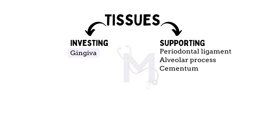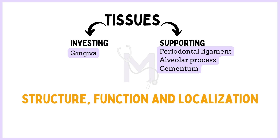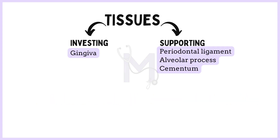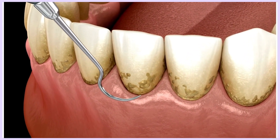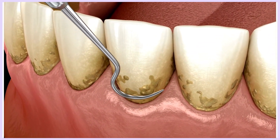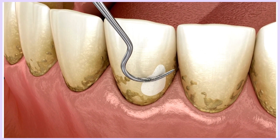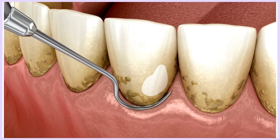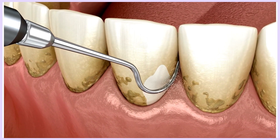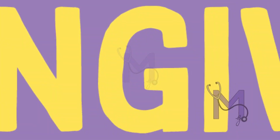The gingiva is the investing tissue and the rest are the supporting or attachment tissues. Each of these four tissues can be further differentiated in terms of structure, function and localization. Understanding this dynamic network of tissues is pivotal for the performance of many procedures related to periodontal therapy. Let us first focus on the most peripheral component of the periodontium, the gingiva.